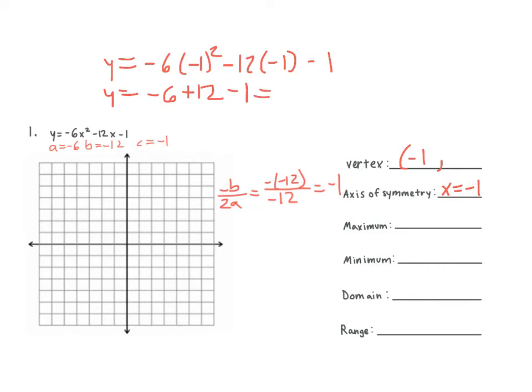What's our second point? 5. So our second point in our vertex is going to be 5. Let's graph our point — we go to the left 1 and up 5. And our axis of symmetry is going to go right through it.